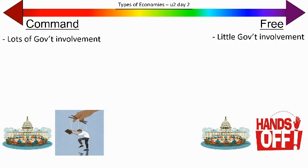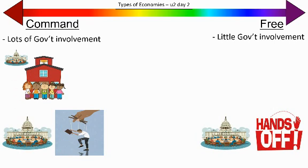As we move away from the extreme command side, maybe you get to choose what channel to watch. But even in some communist economies we've seen, the government pretty much controls the channels — you pick between Channel 1, Channel 2, and Channel 3, which they all pretty much control. So there's little real difference. Think about school in America as a mini example of a command economy — you don't even get to choose to go to school.